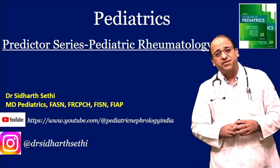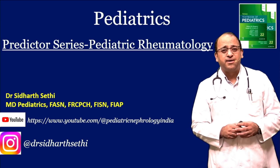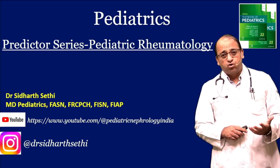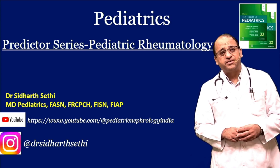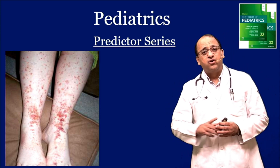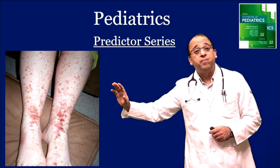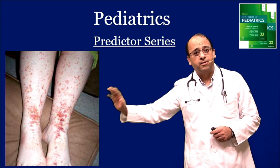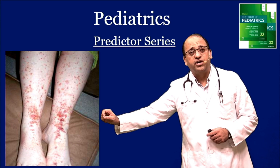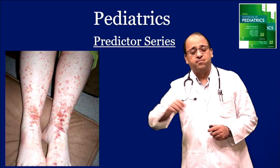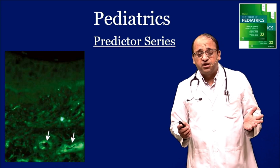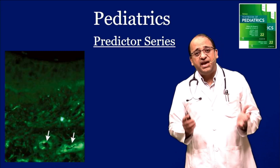Welcome to the pediatrics predictor series for upcoming exams. Today we'll be talking about an important topic in pediatric rheumatology. Remember, every exam will have a child with pain abdomen and palpable purpura — specifically non-thrombocytopenic palpable purpura. In this setting, you should think about the most common vasculitis in children, which is IgA vasculitis.